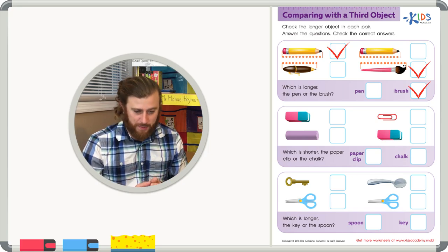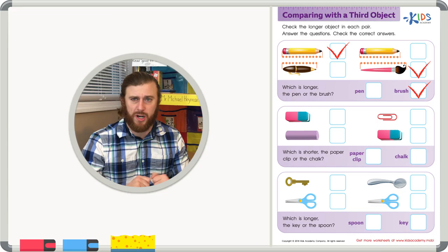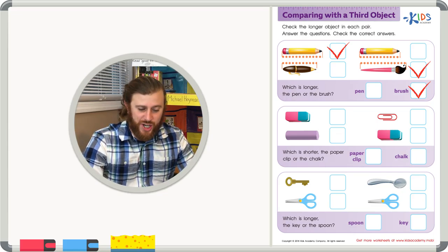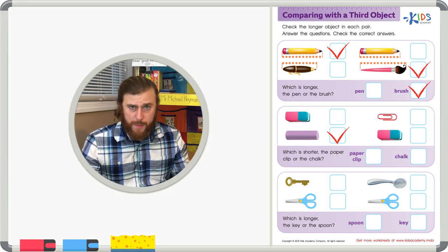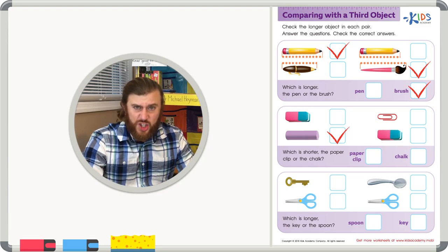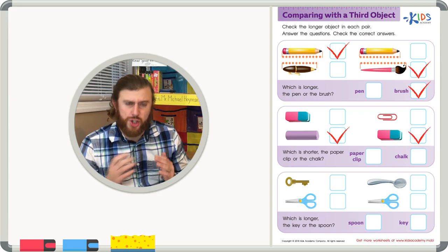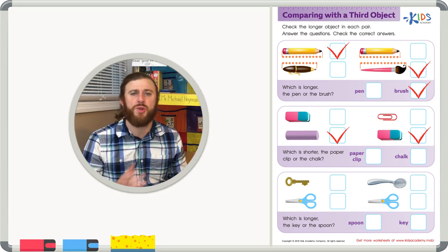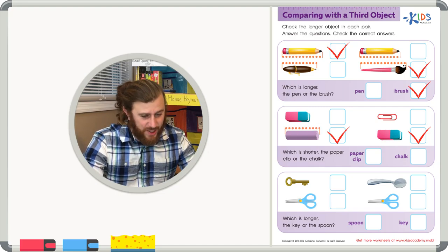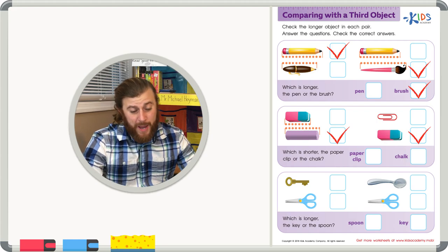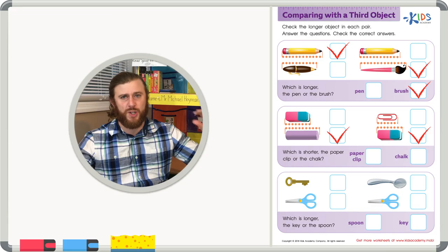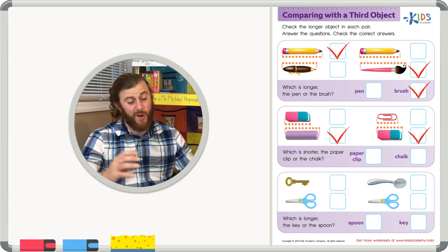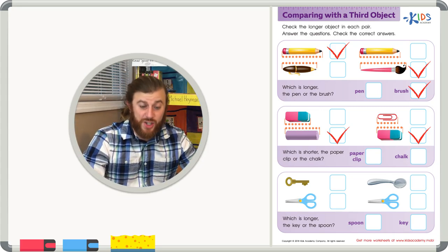Let's try this again with another example. We have an eraser and a piece of chalk — which is longer? It's pretty easy to tell the chalk is longer, so let's check the chalk. We also have a paper clip and that same eraser. The paper clip is shorter than the eraser, so let's check the eraser. Now the tricky question: which is shorter — the paper clip or the chalk? We know the chalk is longer than the eraser, and the paper clip is shorter than the eraser. So the chalk is the biggest thing and the paper clip is the shortest. Therefore, the chalk must be bigger than the paper clip — let's go ahead and check the chalk.